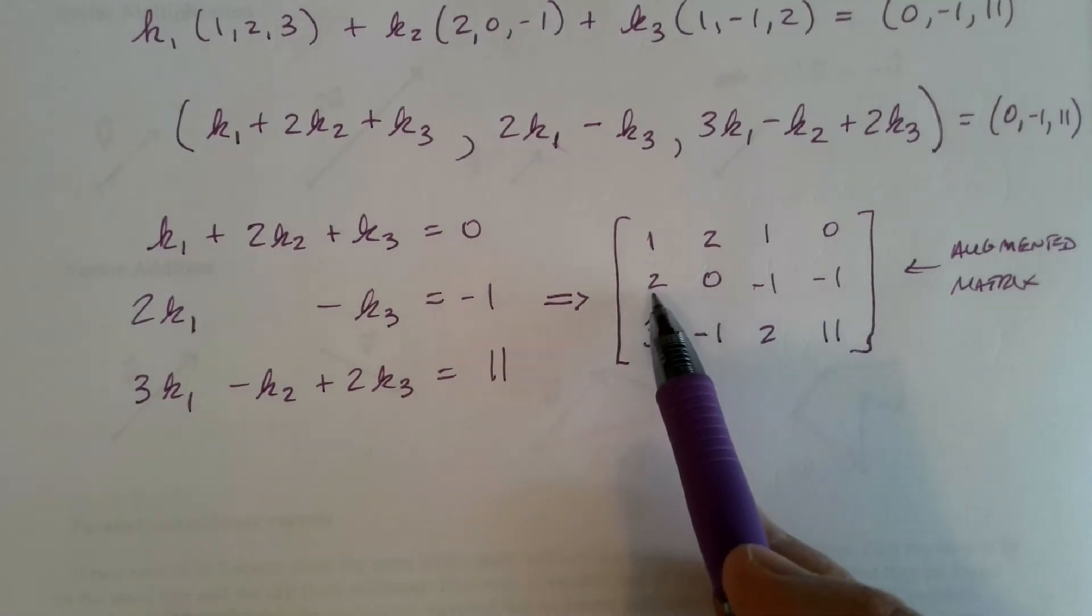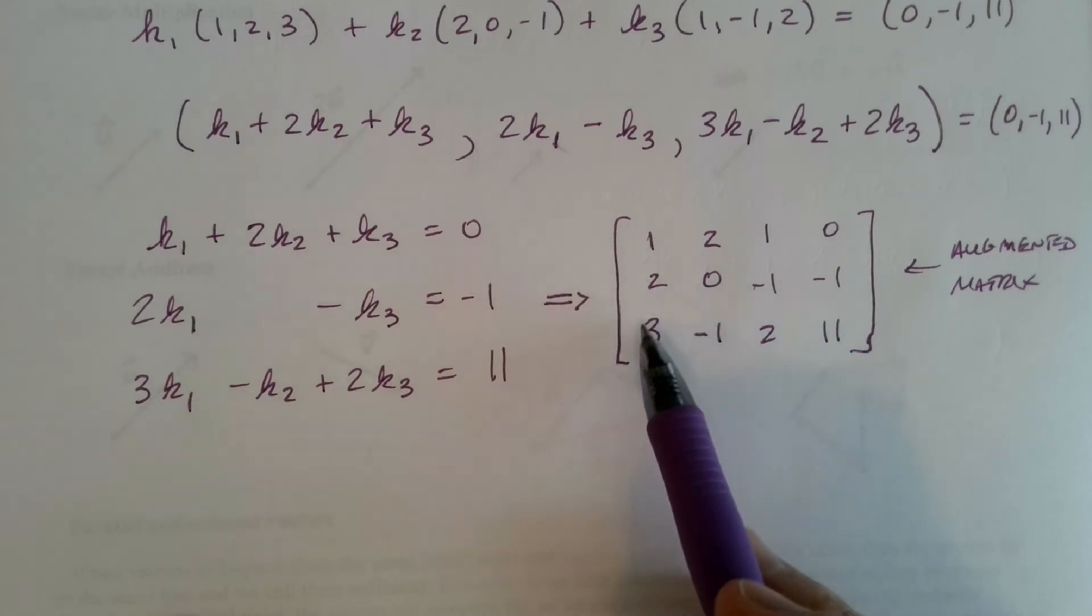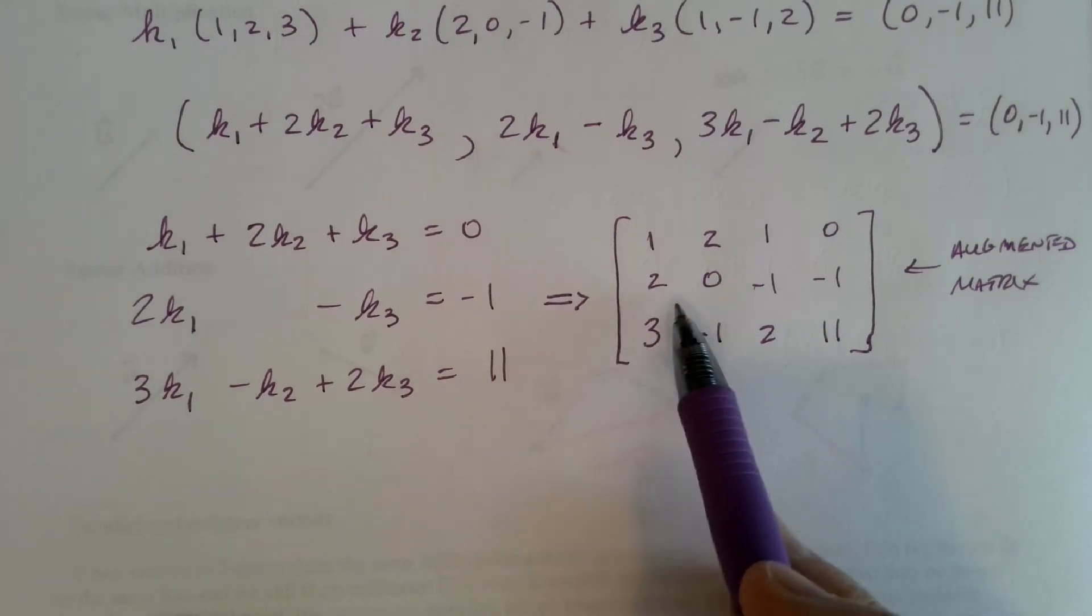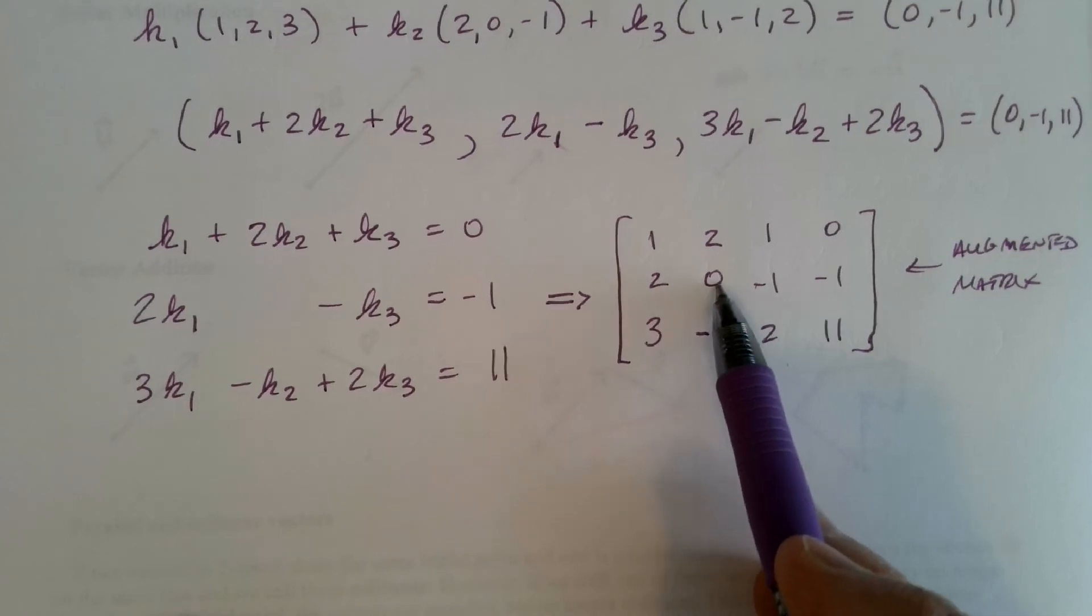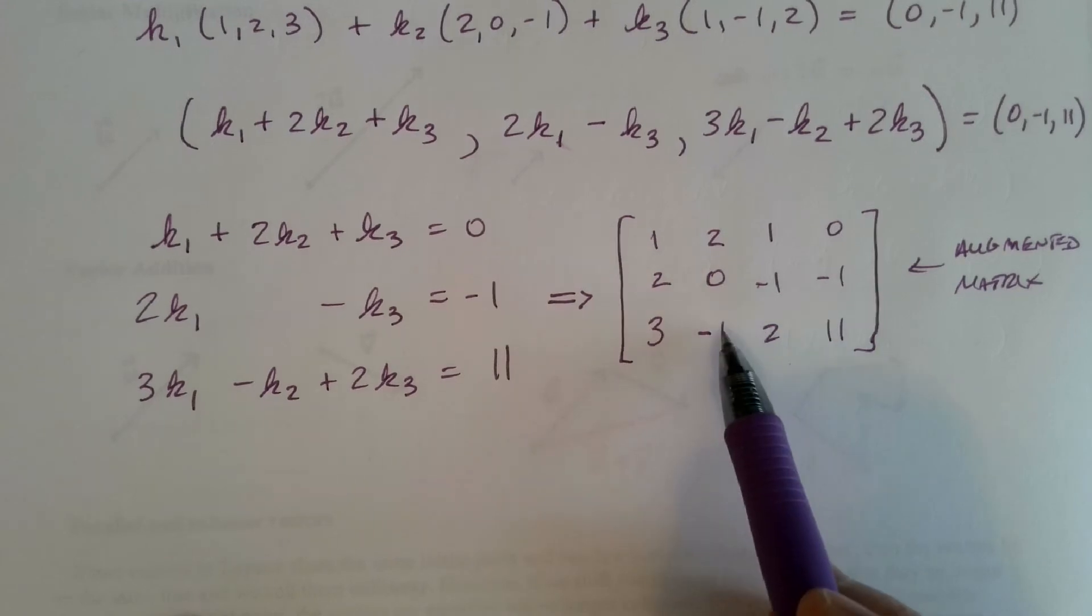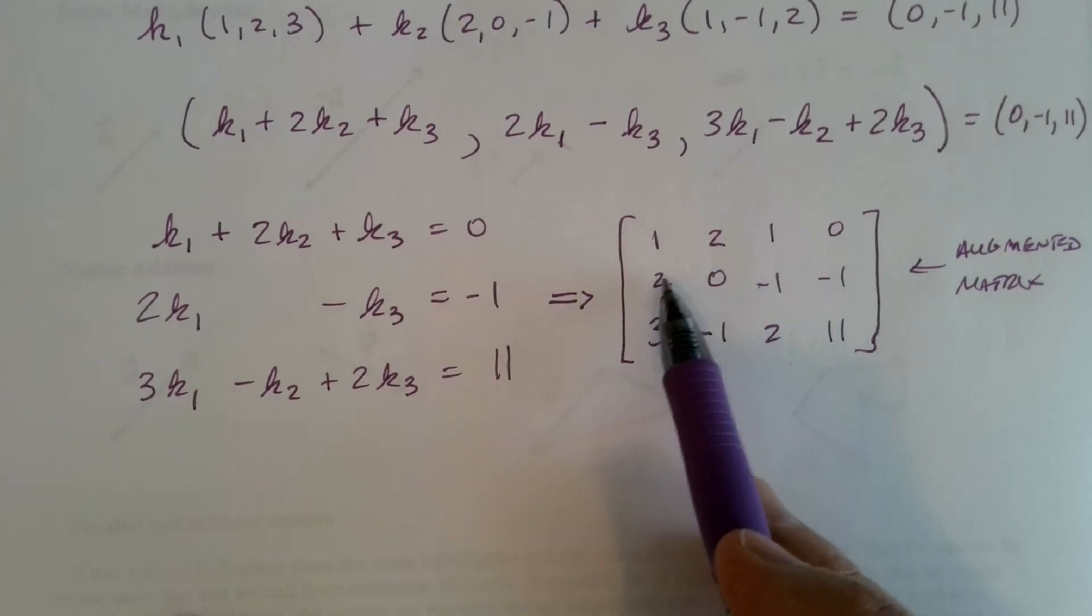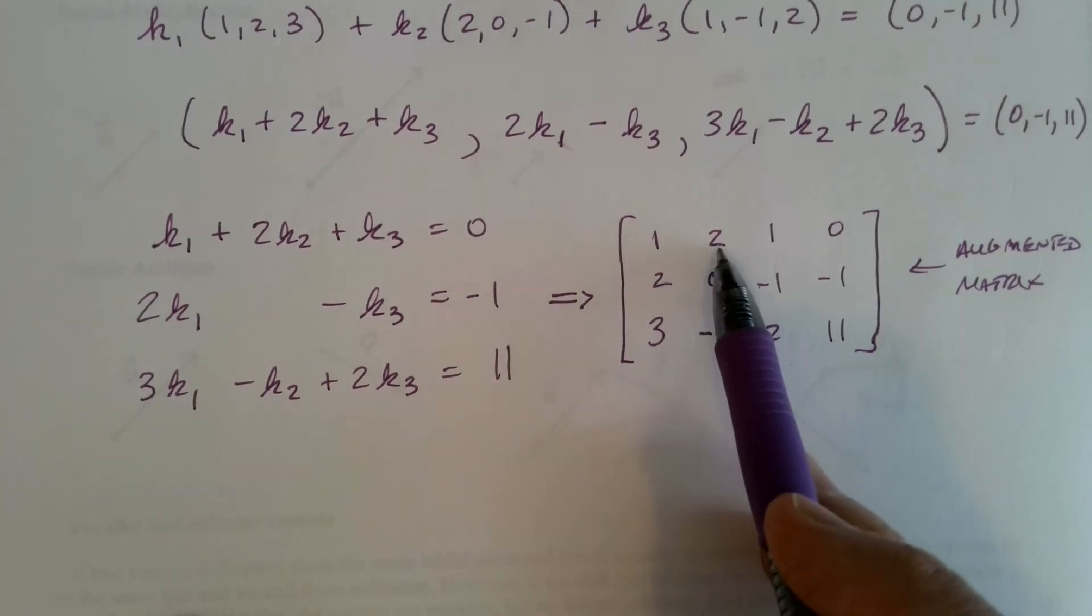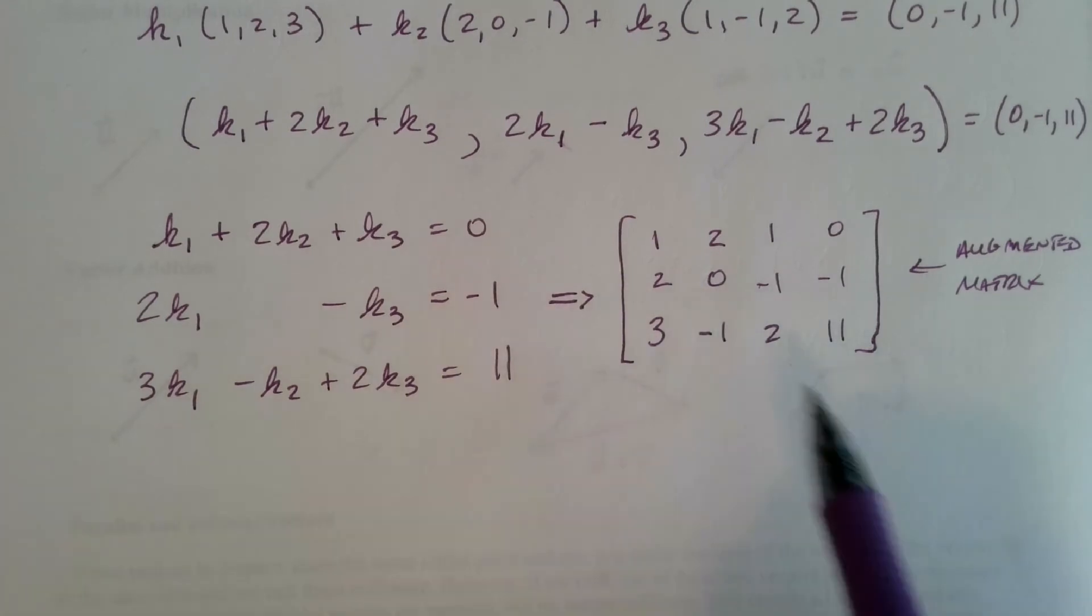So we get a leading 1 here. We already got a 1. Add negative 2 times row 1 to row 2, negative 3 times row 1 to row 3 to get zeros here, and so on. We need to get a leading 1 here next. We might need to interchange rows 2 and 3 possibly. Actually, after we added negative 2 times row 1 to row 2, we'd have a negative 2 here. But at any rate, you get the idea.